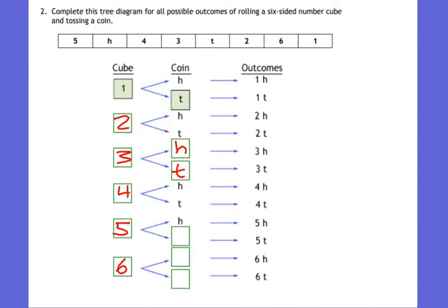For four, flip a coin — it could land on heads or tails. Five, then flip a coin — heads or tails. Then six, flip a coin — heads or tails. Then I have all my possible outcomes listed, and they match up. How many total outcomes of this compound event could I have? Twelve. Two for each number on the cube.